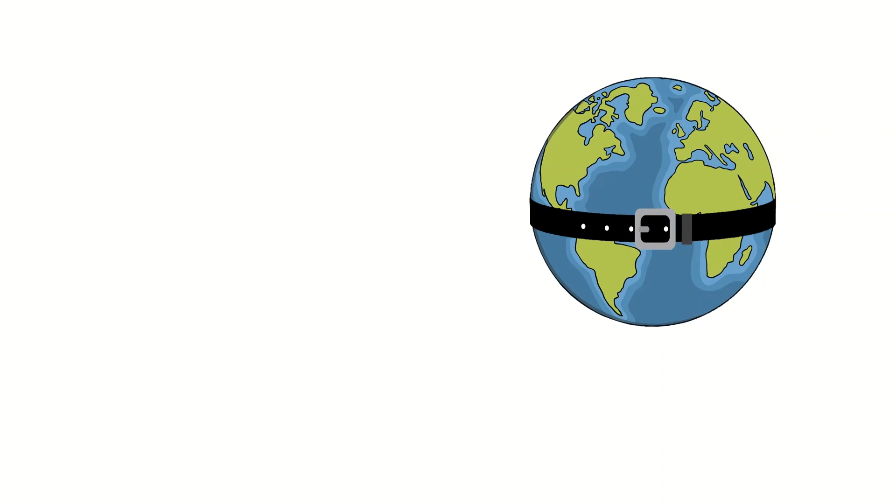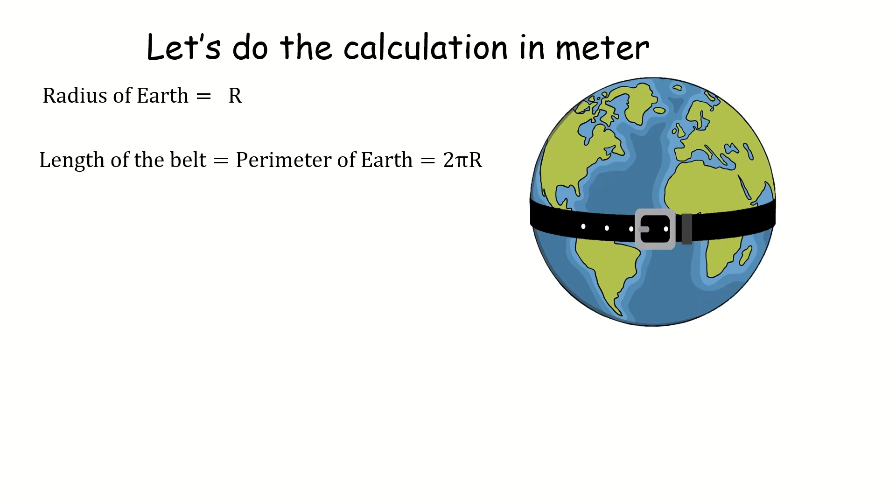Okay here we are going to do all the calculations in meters. Assume that the radius of the Earth is R so the initial length of the belt is the perimeter of the Earth or 2πR.